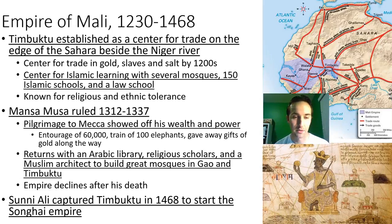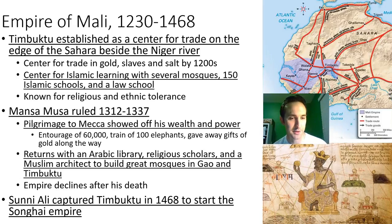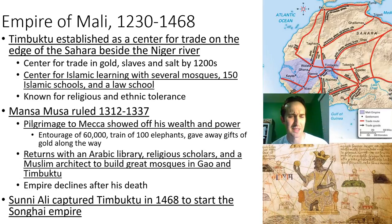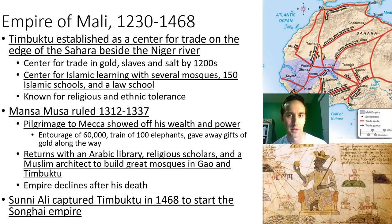He came back from Mecca with an Arabic library, religious scholars, and a Muslim architect who built some of the great mosques in Gao and Timbuktu that still stand to this day — architectural triumphs made out of mud, similar to adobe, built around the 1300s. But after his death, the empire started to fall apart and decline.